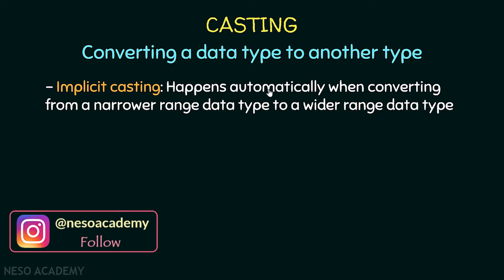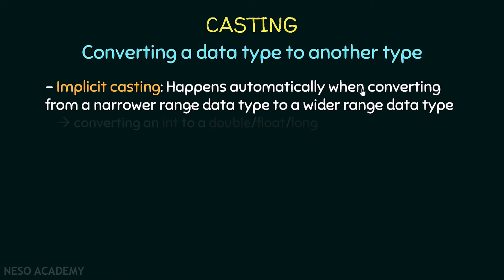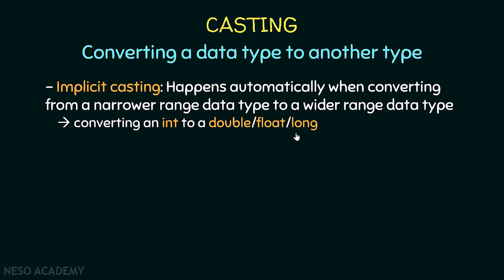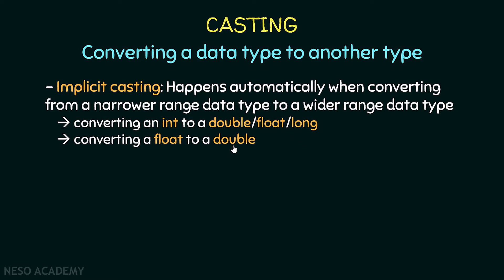Implicit casting happens automatically when converting from a narrower range data type to a wider range data type. For example, converting from an integer to a double, float, or long — this is done automatically because double, float, and long have a wider range than integer. Similarly, converting a float to a double is also implicit casting because a double has a wider range than a float.